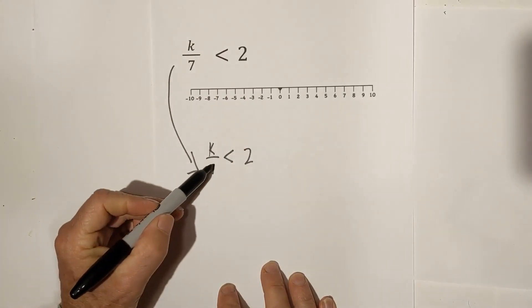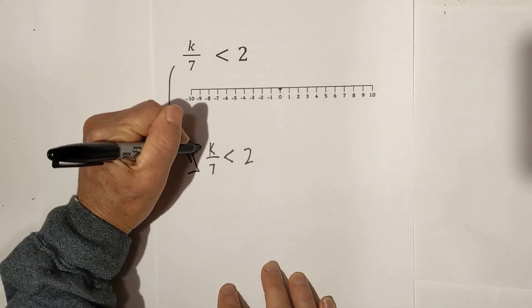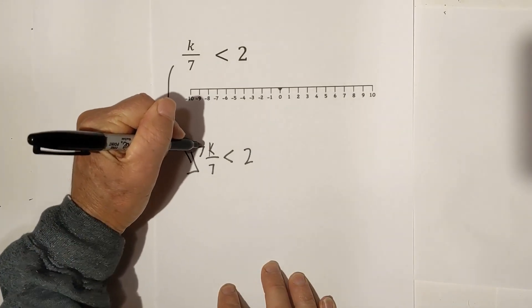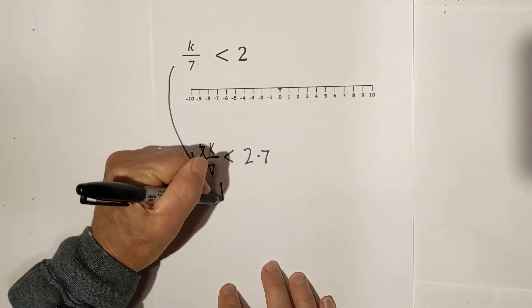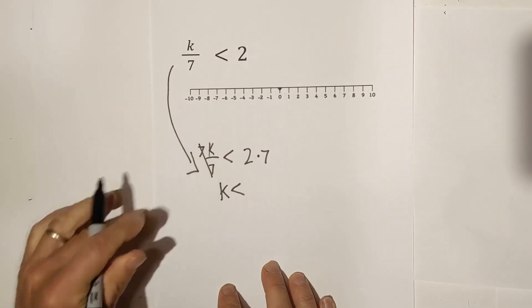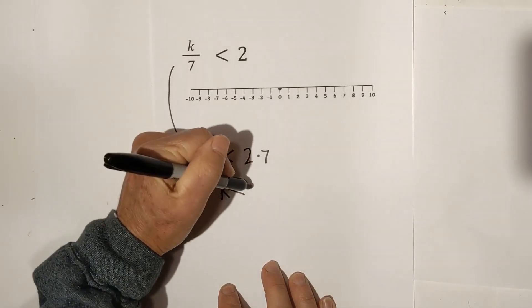So now what we do is we multiply. We're going to get rid of the 7. We're going to multiply, so these will cancel, and this multiplies by 7. These cancel. So K is less than 14.